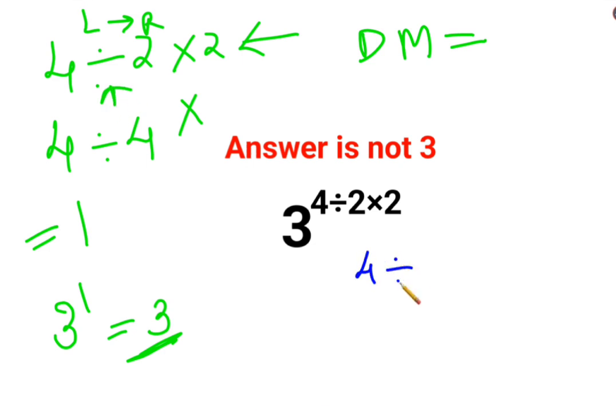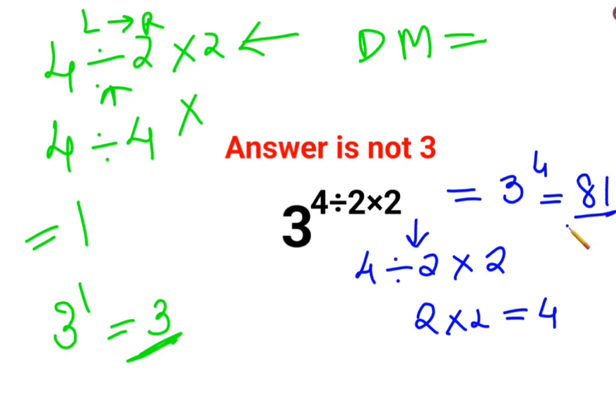So let's do this again. 4 divided by 2 multiplied by 2. So here, like I said, we will do the first operation which happens to be division from your left hand side. So 4 divided by 2 is 2 multiplied by 2, so the answer is 4. Now we need to do 3 raised to 4. So the answer for this question is supposed to be 81.